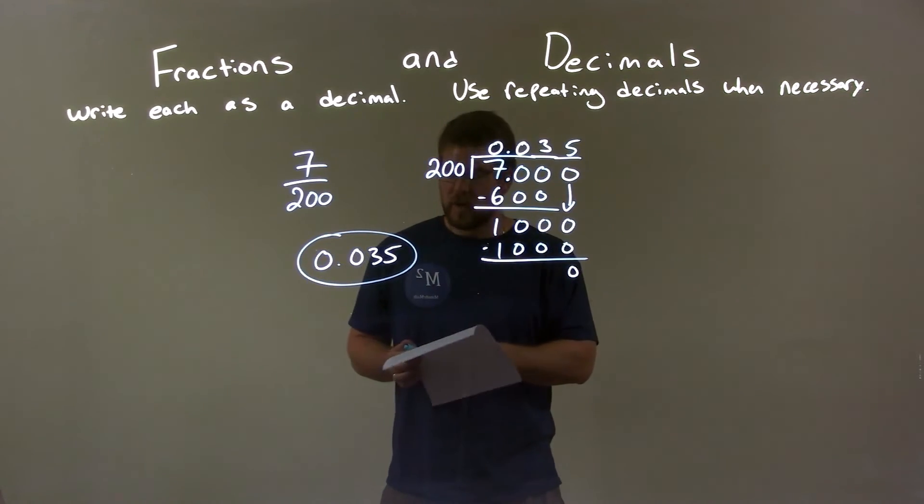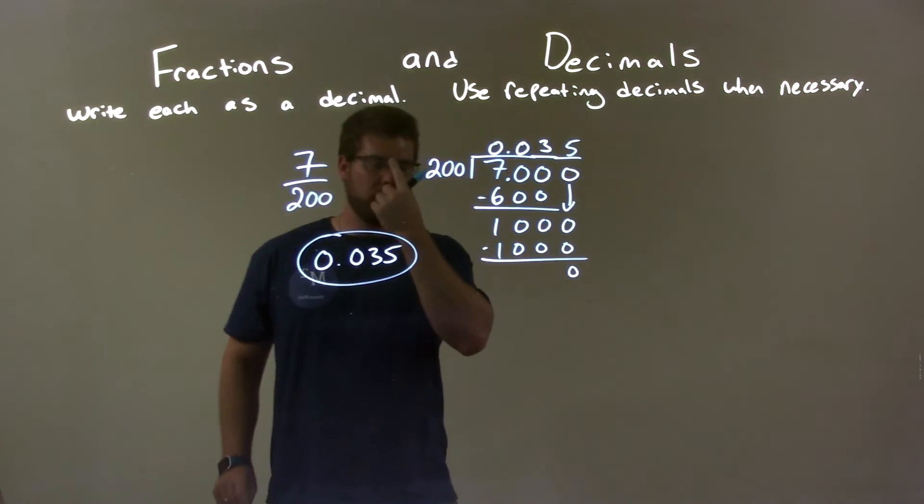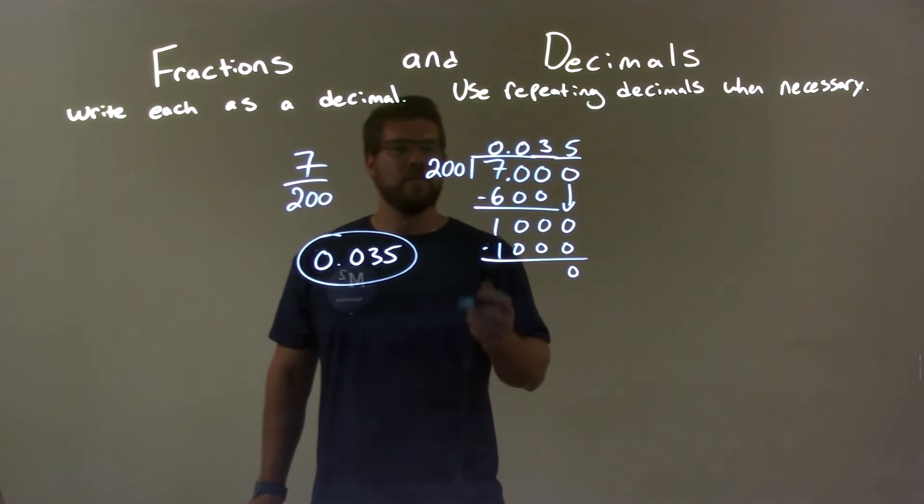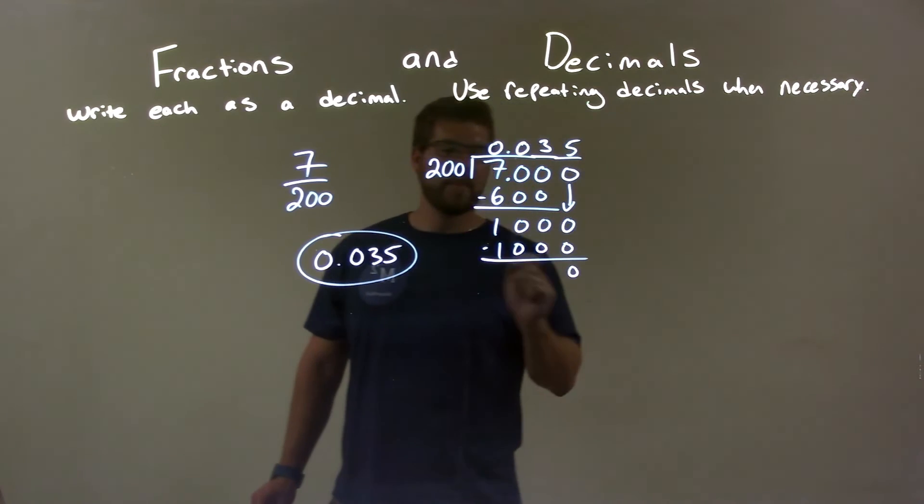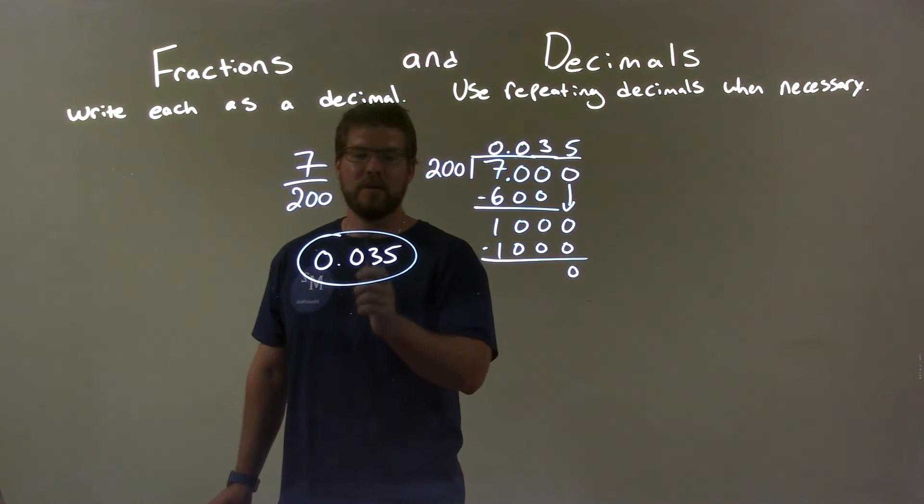So, quick recap. We're given 7 over 200, and we write that as a decimal. I did long division of 200 into 7, added a few zeros there to get me there, and it gave us a final answer of 0.035.